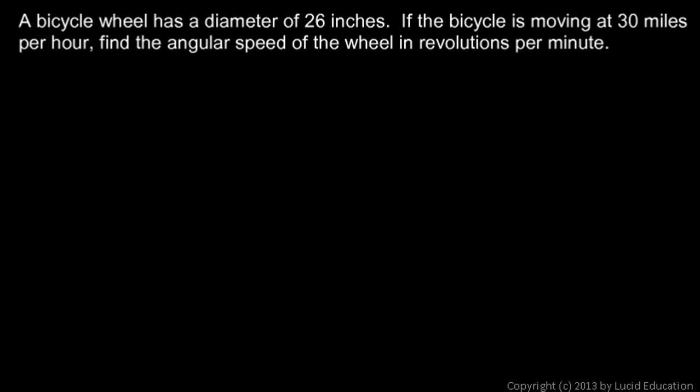A bicycle wheel has a diameter of 26 inches. If the bicycle is moving at 30 miles per hour, find the angular speed of the wheel in revolutions per minute.